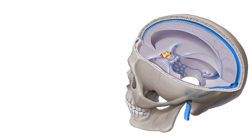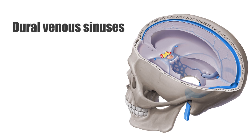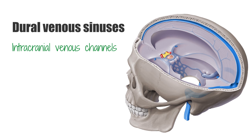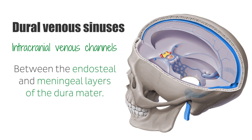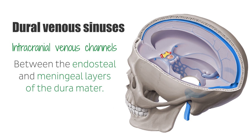Let's have a look at the dural venous sinuses. These are intracranial venous channels located between the endosteal and meningeal layers of the dura mater that drain venous blood from the brain and the meninges into the internal jugular vein. Unlike the venous system found in the rest of the body, the dural venous sinuses do not follow the same course as the cerebral arterial system and they are valveless, which allows for the bidirectional flow of blood within these vessels.